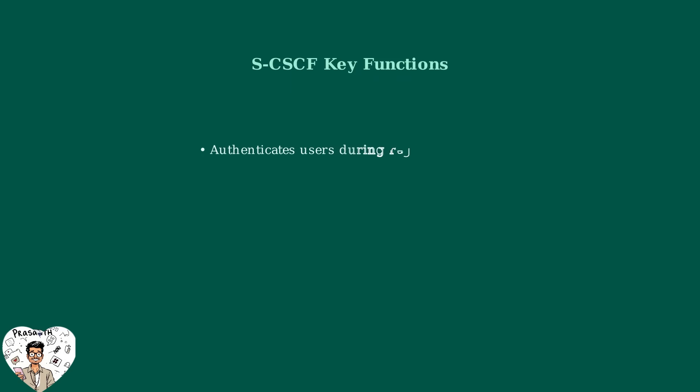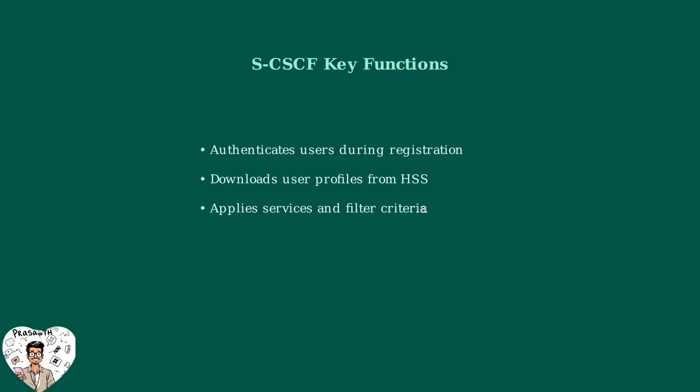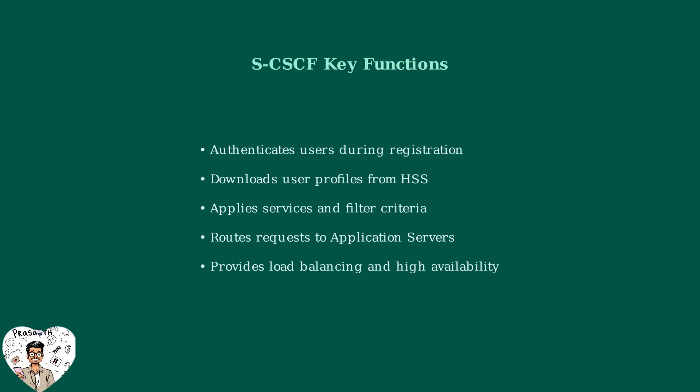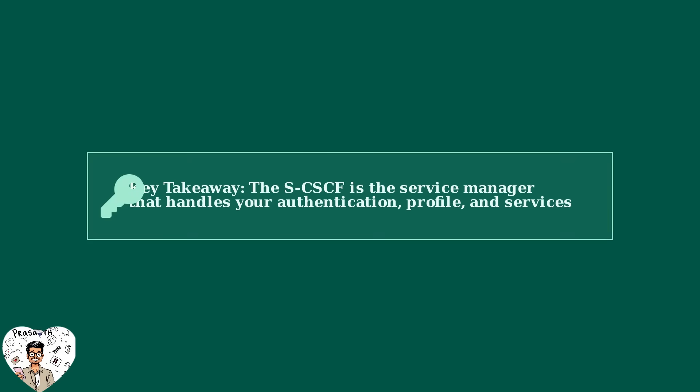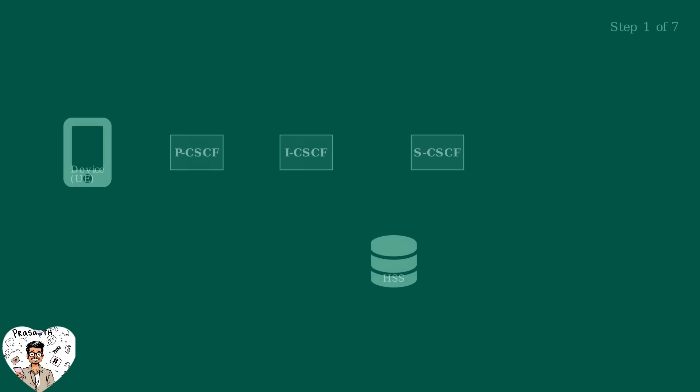To summarize, the SCSCF handles five critical functions in the IMS network: it authenticates users, manages their profiles, applies services, routes requests appropriately, and ensures system reliability through load balancing. The key takeaway is that the SCSCF acts as your personal service manager in the IMS network — it knows who you are, what services you have, and ensures you get the right experience every time you connect.